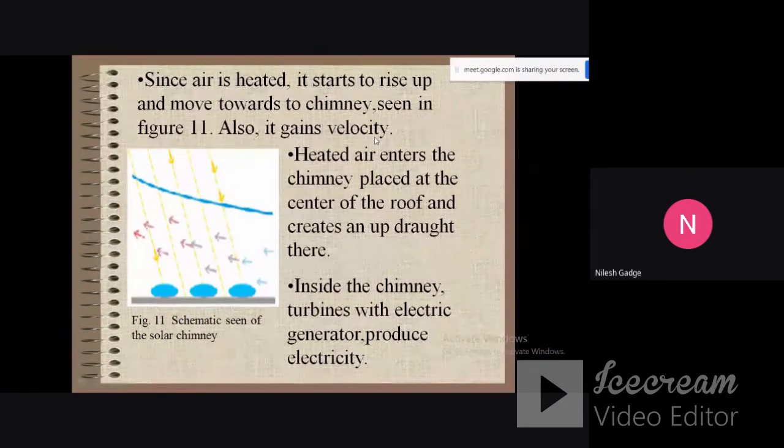It also gains velocity. Heated air enters the chimney placed at the center of the roof and creates an updraft there. Inside the chimney, turbines with electric generators produce electricity.